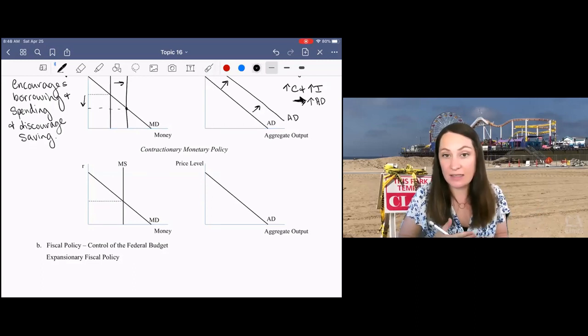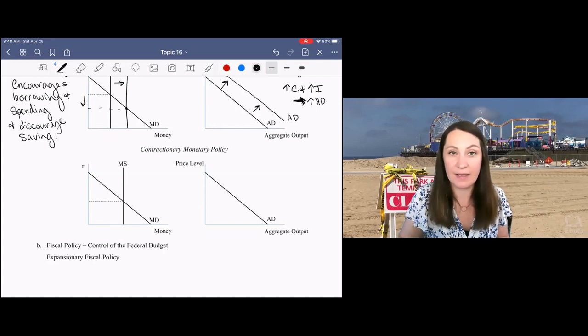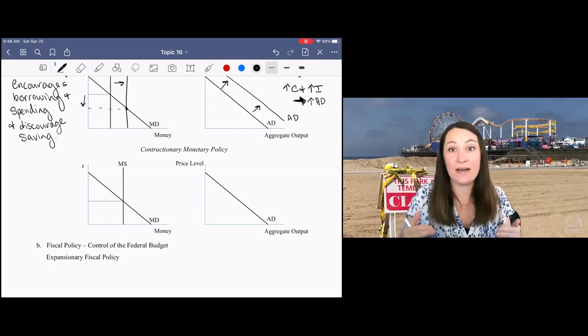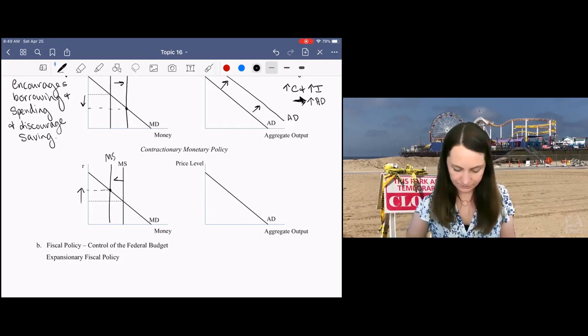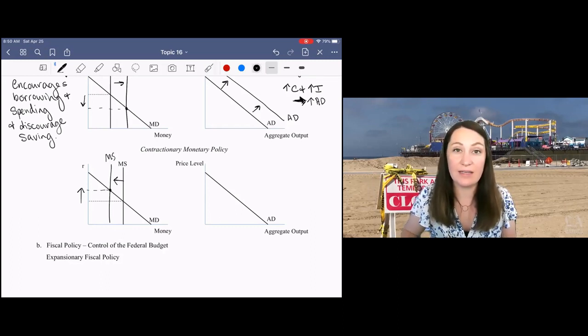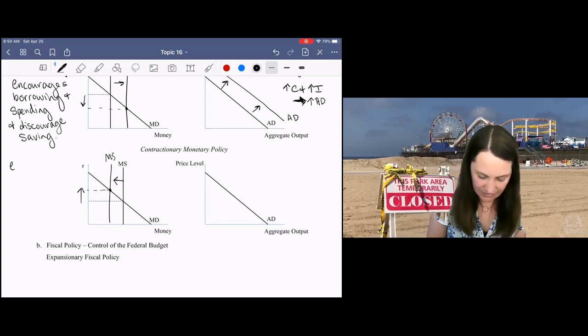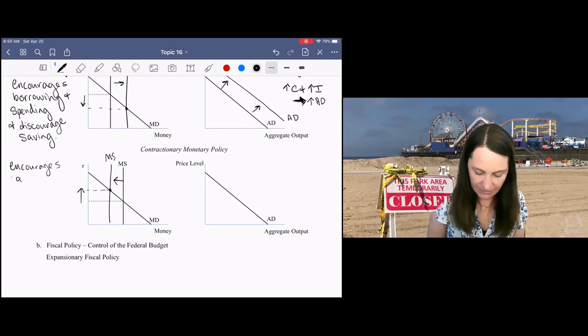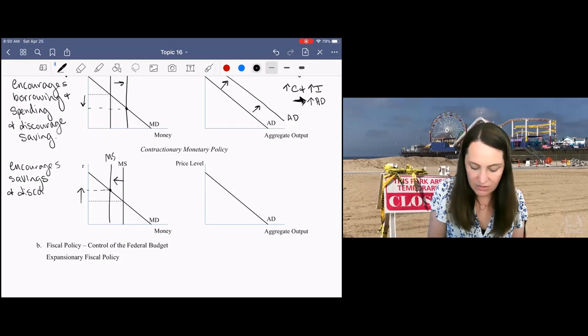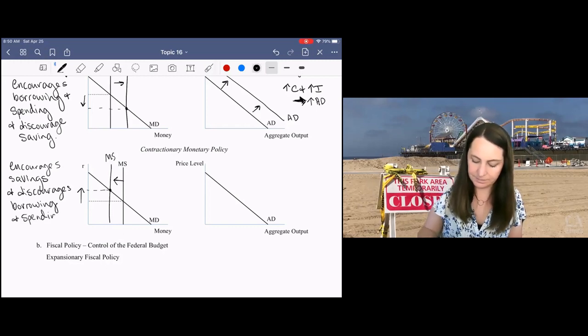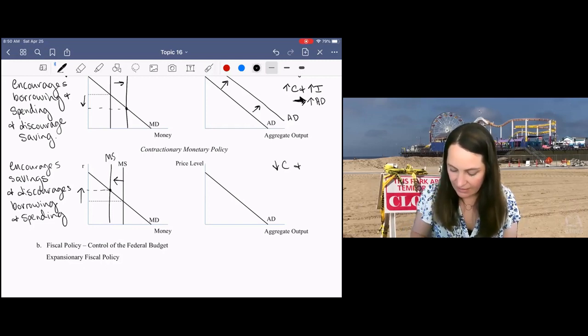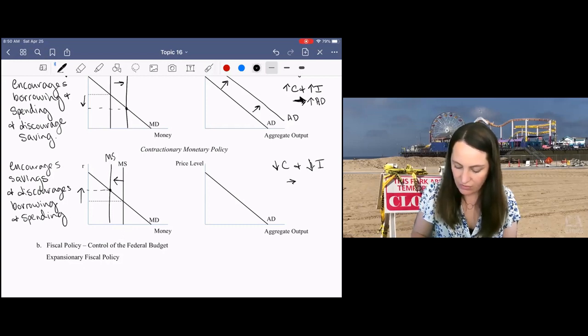Contractionary monetary policy works in exactly the opposite way. In times of rapid economic expansion, we need to cool down growth. We want more slow, steady growth. So we need to decrease money supply, leading to an increase in the interest rate, giving people more of an incentive to save their money rather than spend it, and cool down investment by making borrowing money more expensive. This encourages savings and discourages borrowing and spending, decreasing consumption and investment and leading to a decrease in aggregate demand.